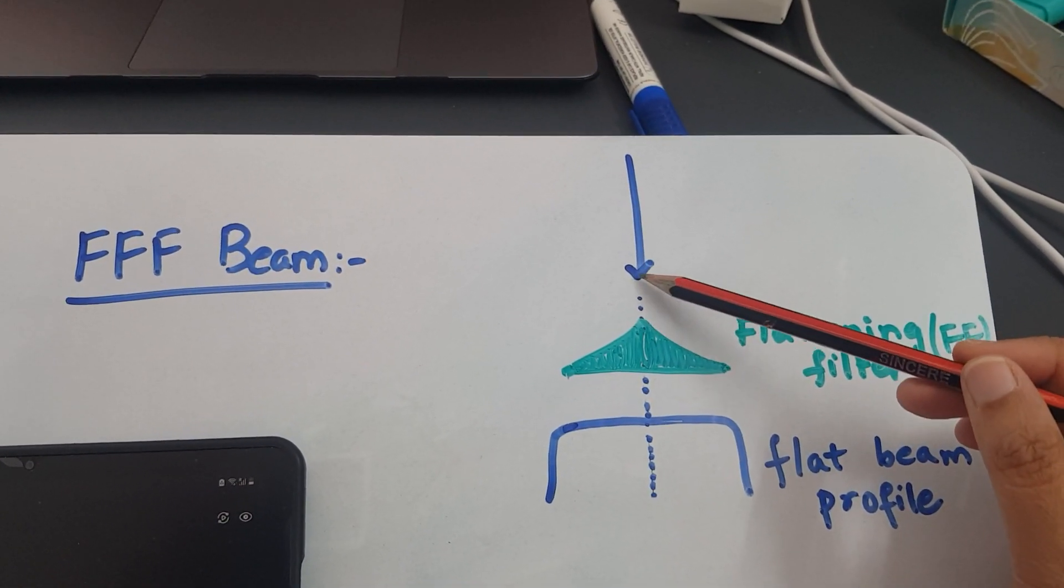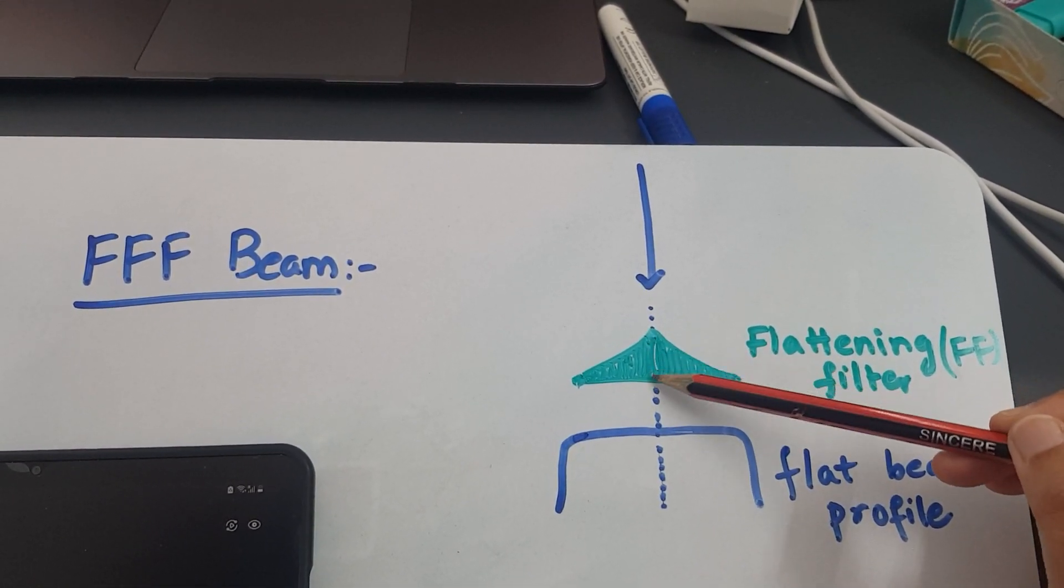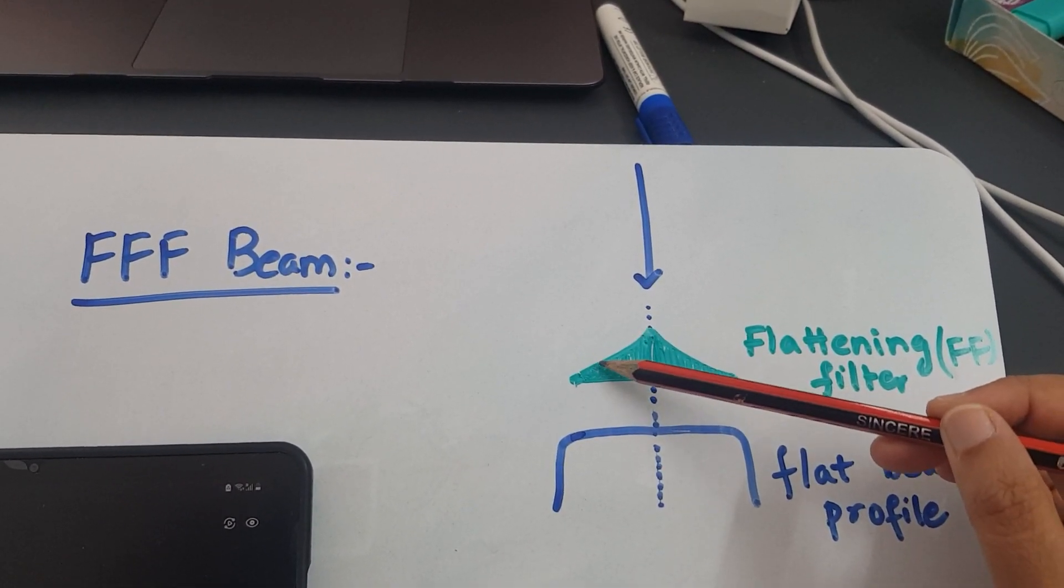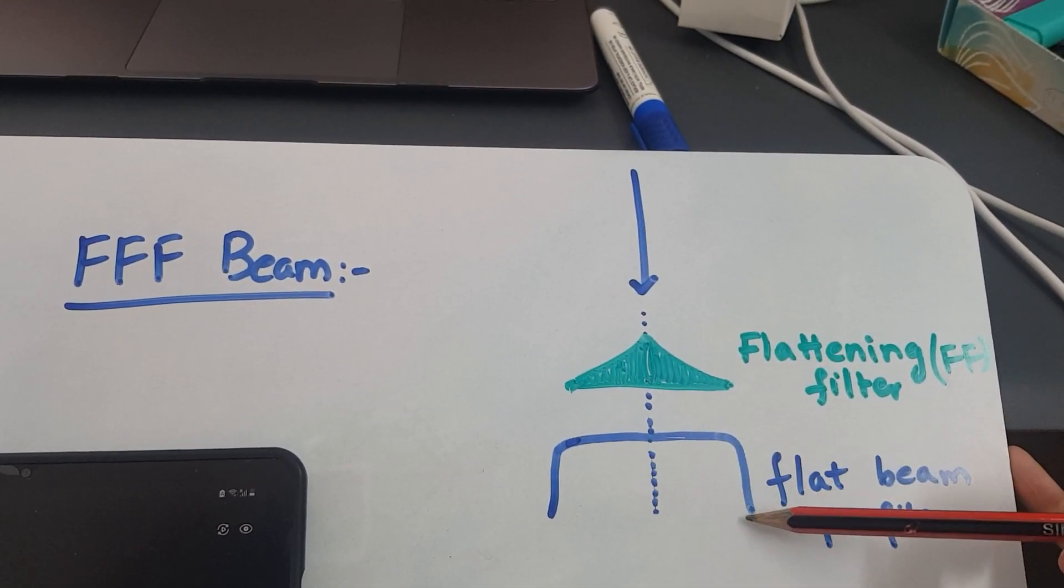Since most of the beam is forward peaking, this will be the hard beam which is hitting here and the soft beam will be hitting here. And that's how we get a flat beam profile.